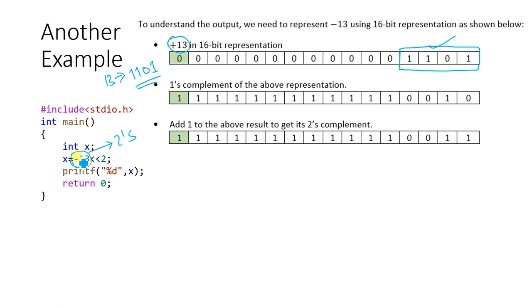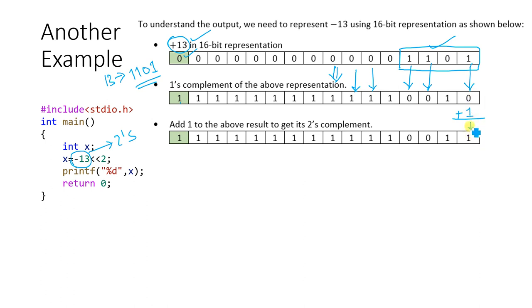Since we need to represent minus 13, we convert to two's complement. First, we take the one's complement by flipping all bits: zeros become ones and ones become zeros. Then we add 1 to the one's complement result. After adding 1, we get the two's complement representation of minus 13. The leftmost bit is now 1, confirming this is a negative number.